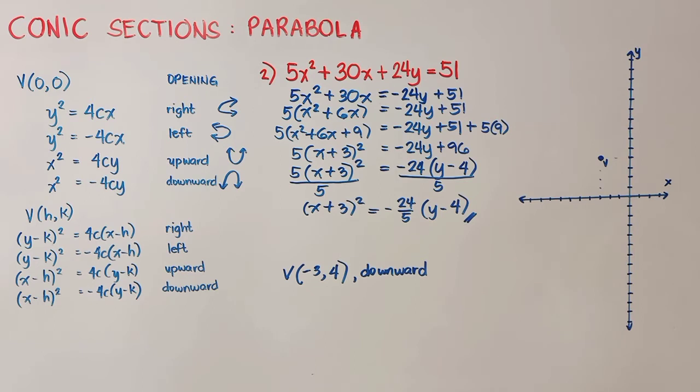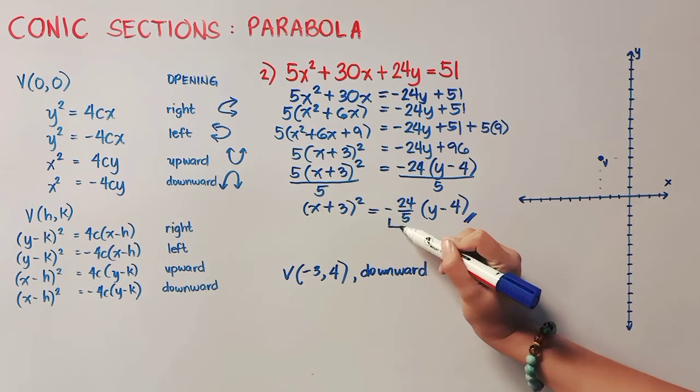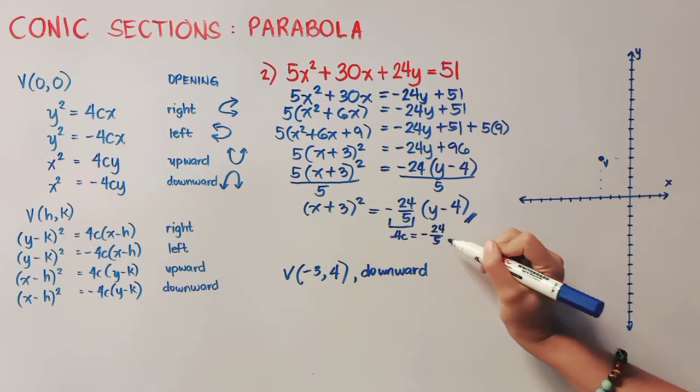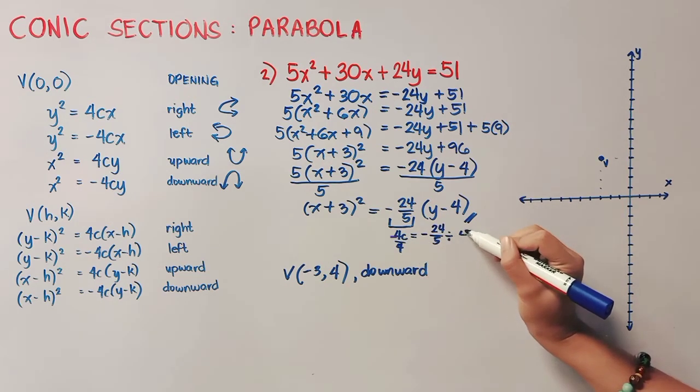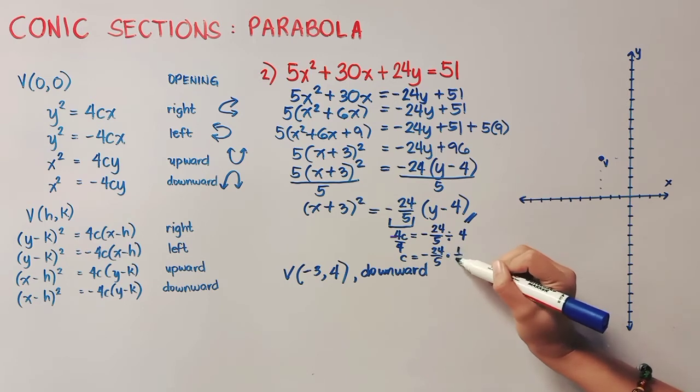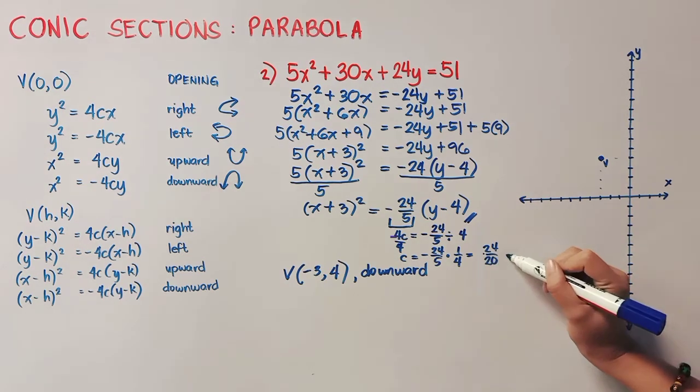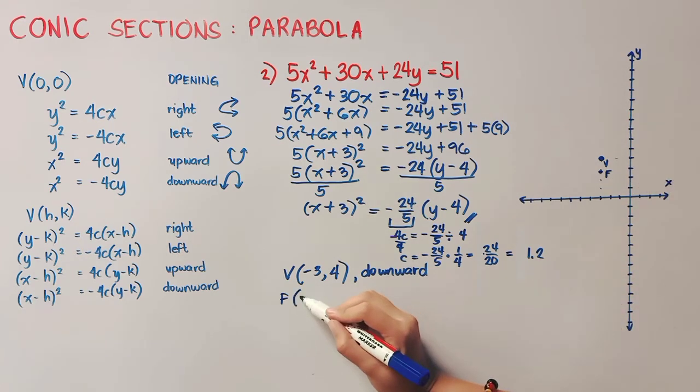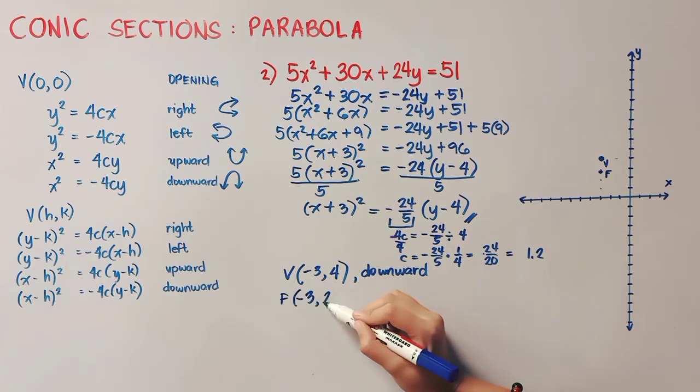Now let us get the value of our c. Remember that this portion here is our negative 4c. So that's negative 4c is equal to negative 24 over 5. Now we have to divide both sides by 4. So that is negative 24 over 5. We'll make it into multiplication. And we will reciprocate 4. So that is positive 24 over 20 which is equal to 1.2. That means to say that we have to count 1.2 units downward to get our focus. So 1.2 here. So it's in this point. So this point is negative 3 and then 2.8.